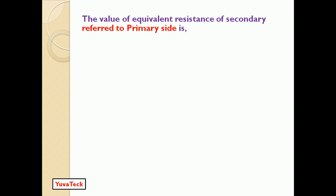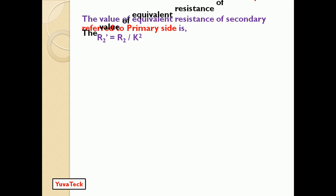Suppose in this case the equivalent value of resistance of the secondary referred to the primary is R2'. We found that R2' = R2/K². In the equivalent circuit we will have two circuits — primary circuit and secondary circuit. Referred to primary means we take whatever parameters are available on the secondary and transfer them to the primary side, in which case we divide by K². Secondary side parameters like resistance, reactance, or impedance and load resistance — all will be brought to the primary side. That is what referred to primary side means. R2' = R2/K².